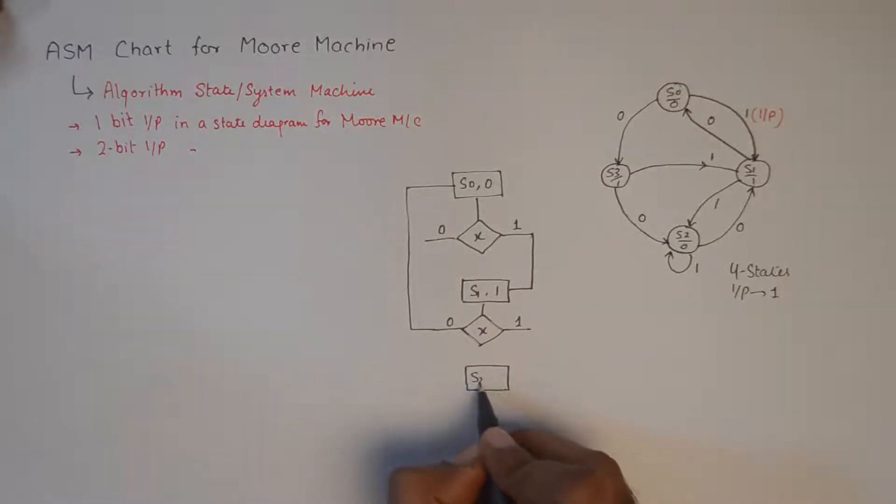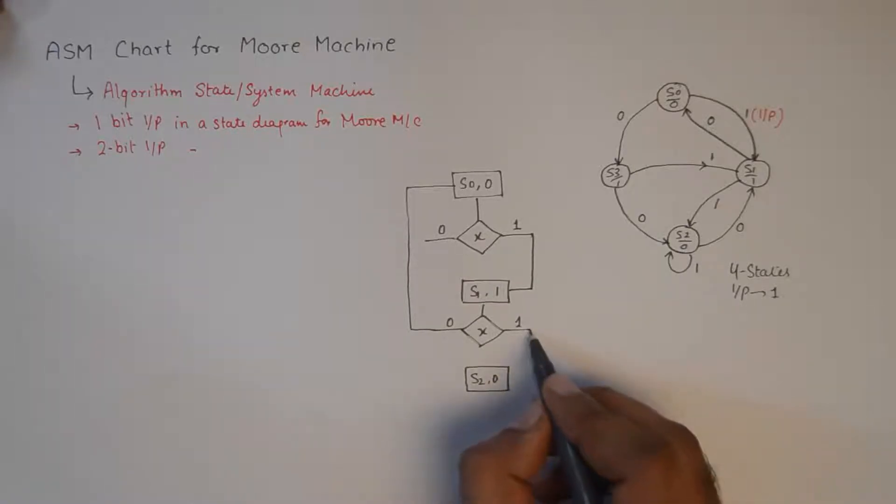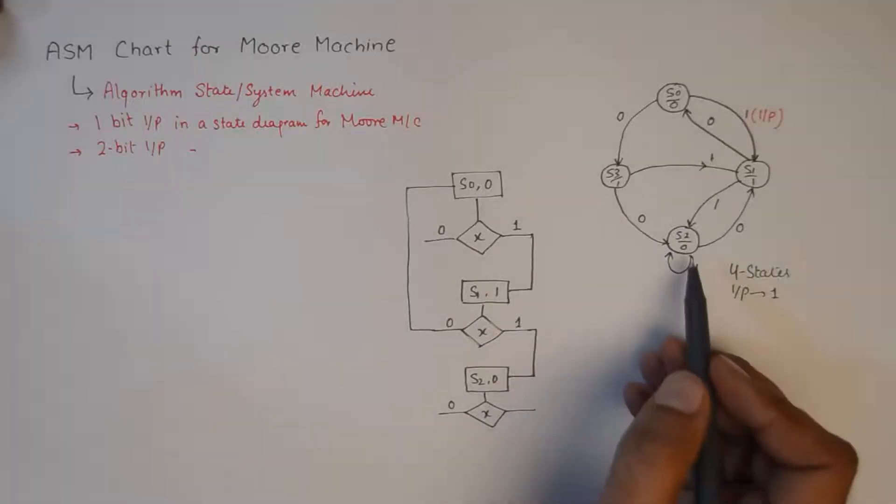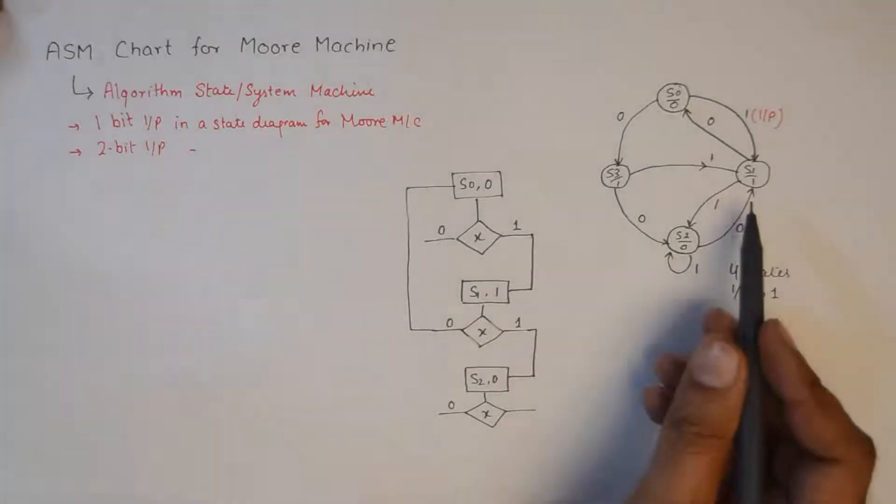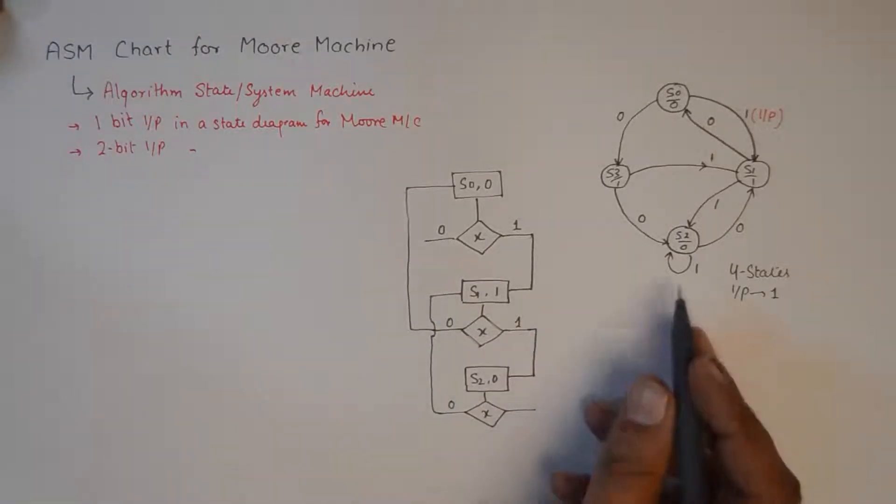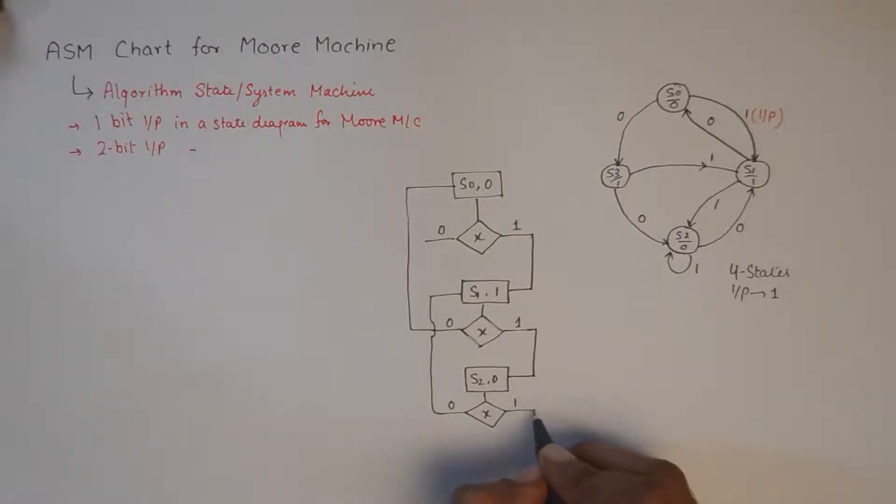S2 is another state which is represented using a state box and its output is 0. We reach S2 from S1 when the input is 1. At S2 again two decisions to be made. For input of 0, we go back to S0, we go back to S1. And at 1 I stay at S2.